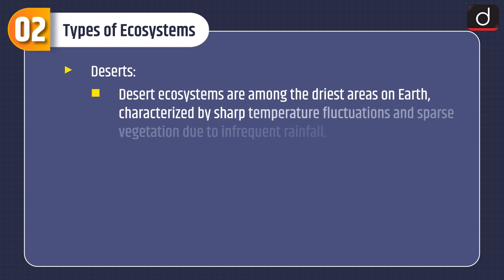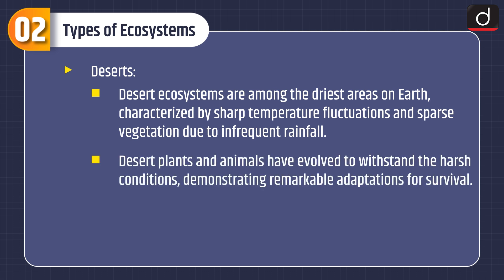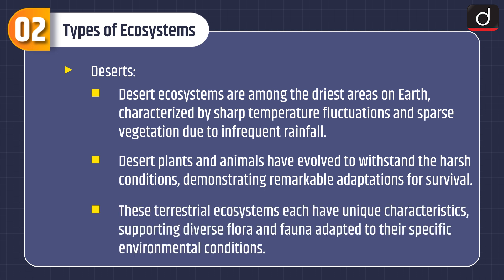Desert ecosystems are among the driest areas on earth, characterized by sharp temperature fluctuations and sparse vegetation due to infrequent rainfall. Desert plants and animals have evolved to withstand the harsh conditions, demonstrating remarkable adaptations for survival. These terrestrial ecosystems each have unique characteristics supporting diverse flora and fauna adapted to their specific environmental conditions.